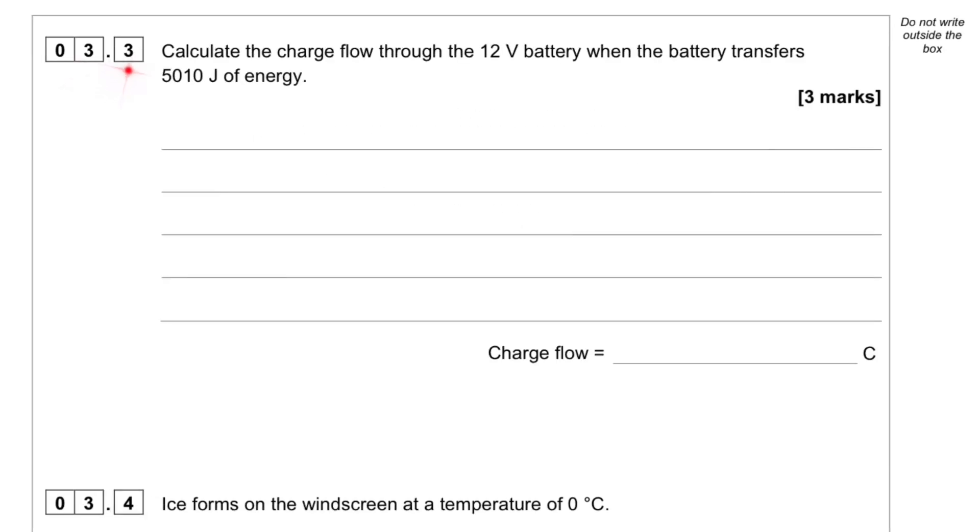Question 3.3. Calculate the charge flow through the 12V battery when the battery transfers 5010 joules of energy. We know that the energy is 5010 joules and the voltage PD is 12V. We're looking for the charge Q.